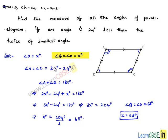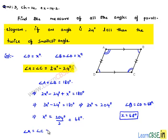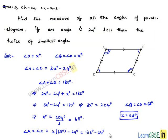Now we find the values of angle A and angle C. Angle A equals angle C equals 2 times 68 minus 24 degrees. 2 times 68 is 136, and 136 minus 24 equals 112 degrees. Therefore, angle A equals angle C equals 112 degrees, and angle B equals angle D equals 68 degrees each.